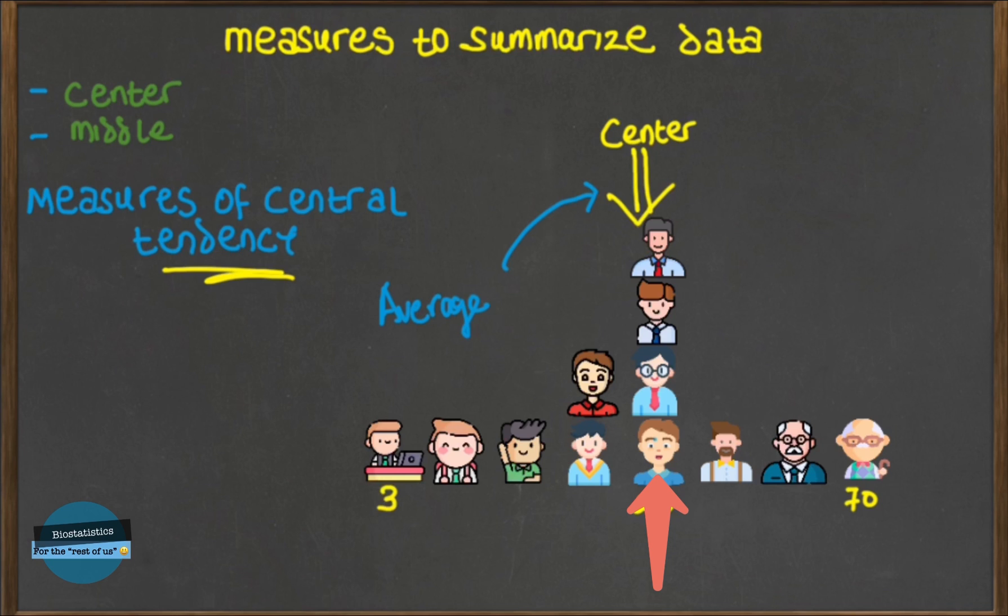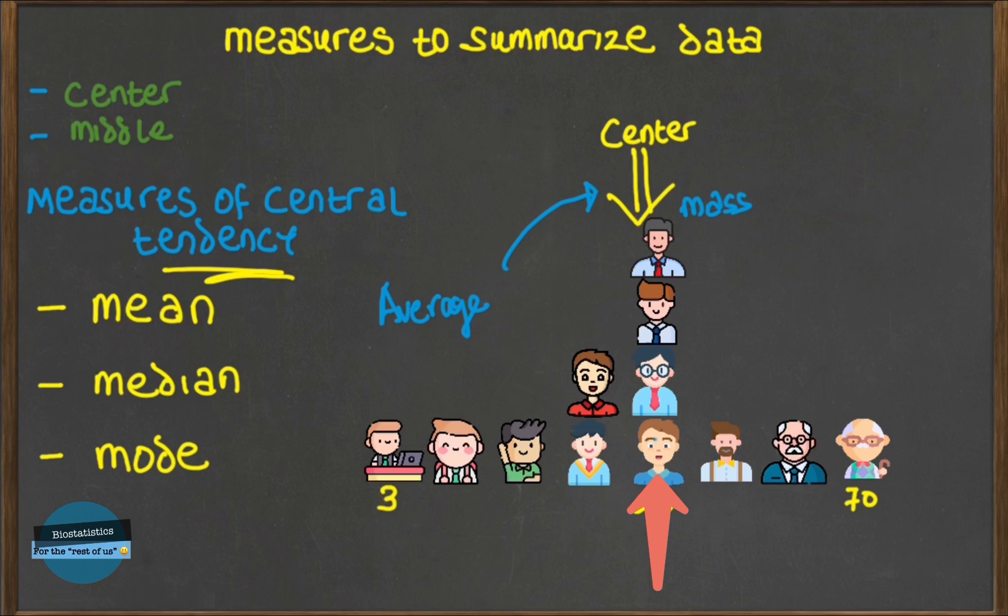Hence an average is a value which tends to sum up or describe the center of that data, or should I say even the mass of the data. So if you see these data points, that area where they tend to concentrate at the center is the mass—that's the mass of the data. Now the most commonly used measures are the mean, the median, and the mode.